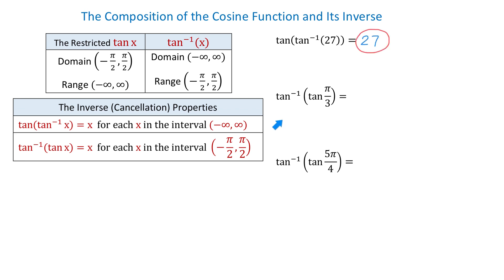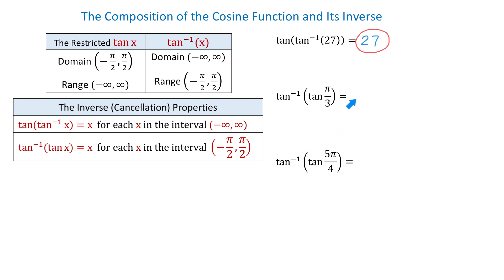In the second example, we have inverse tangent of tangent of pi over 3. Because this expression starts with inverse tangent and has tangent in the parenthesis, we will use the second property. Pi over 3 is on the interval between negative pi over 2 and positive pi over 2, therefore the result here will be pi over 3.